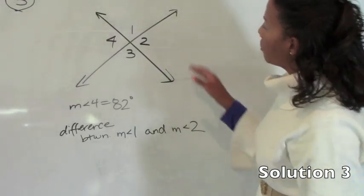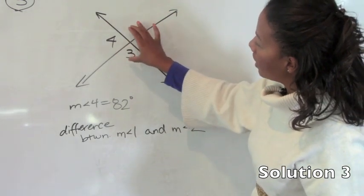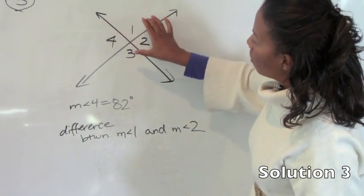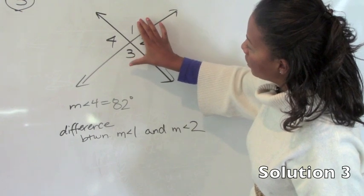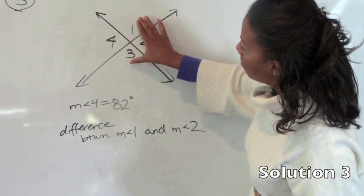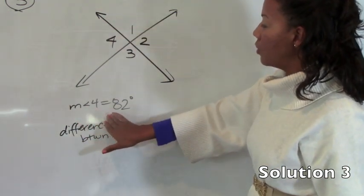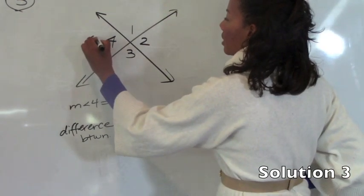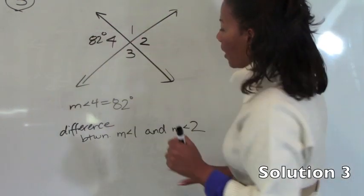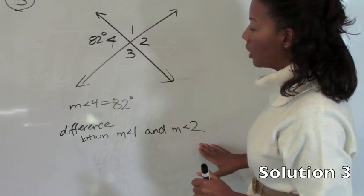Number 3 shows that we have two intersecting lines that form two sets of vertical angles. Remember that vertical angles are always congruent, meaning they have the same measure. So angles 1 and 3 have the same measure and angles 2 and 4 have the same measure. We're told that the measure of angle 4 equals 82 degrees and we are asked to find the difference between the measure of angle 1 and the measure of angle 2.